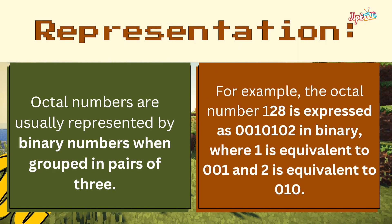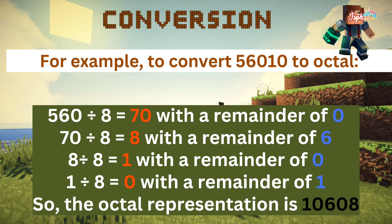For example, the octal number 128 is expressed as 001 010 in binary, where 1 is equivalent to 001 and 2 is equivalent to 010. To convert 560 to octal: 560 ÷ 8 = 70 remainder 0; 70 ÷ 8 = 8 remainder 6; 8 ÷ 8 = 1 remainder 0; 1 ÷ 8 = 0 remainder 1. Reading remainders in reverse, the octal representation is 1060.